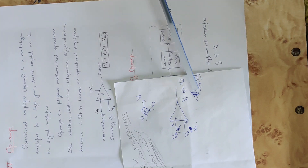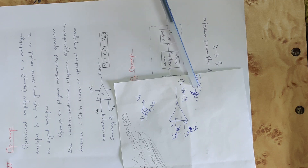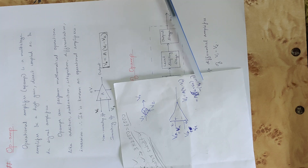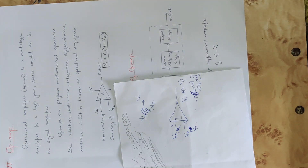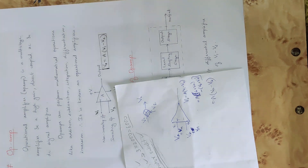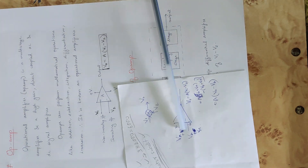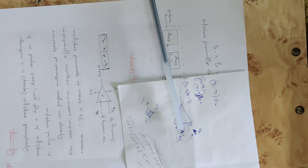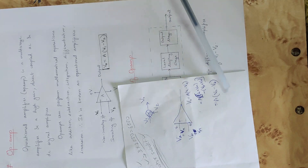Substituting into the equation: A into (VA plus VN) minus (VB plus VN). The VN terms cancel each other out. The final equation is: VO equals A into (VA minus VB). The common noise voltage VN is cancelled in the differential amplifier.